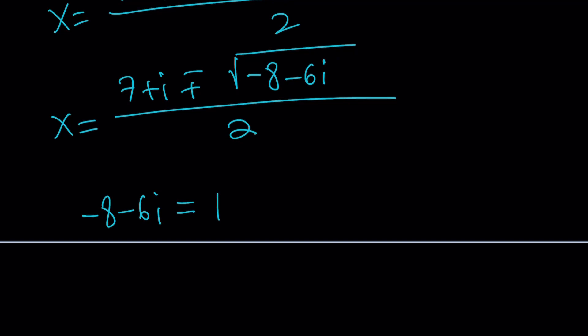We can write it as 1 minus 6I minus 9 or 1 minus 6I plus 3I quantity squared. And guess what? This is equal to 1 minus 3I squared. So, the discriminant is a perfect square, which is nice. We're going to go ahead and plug it in here.